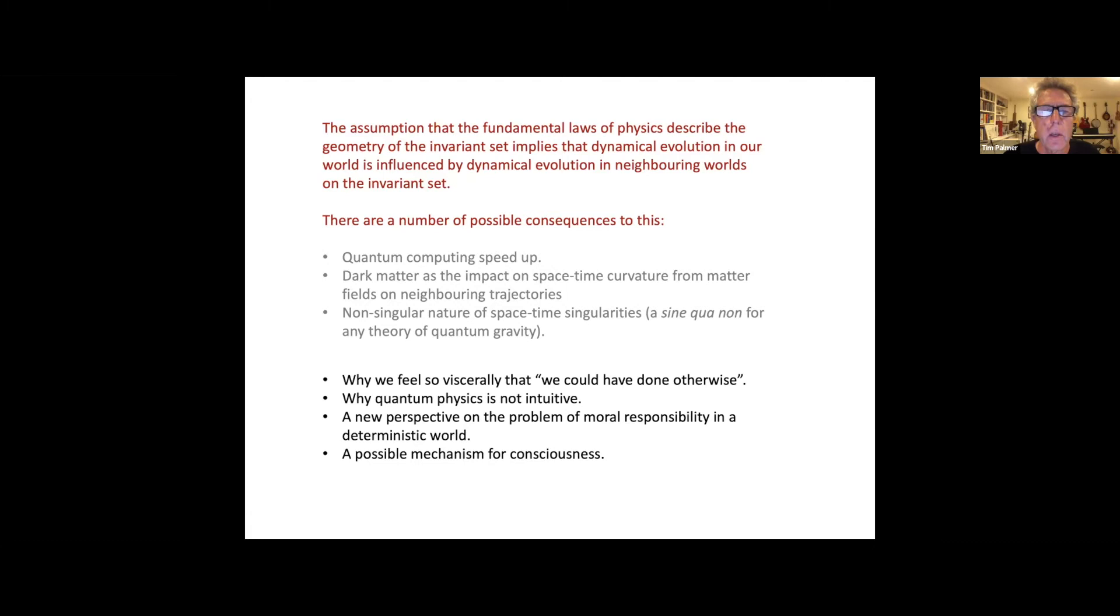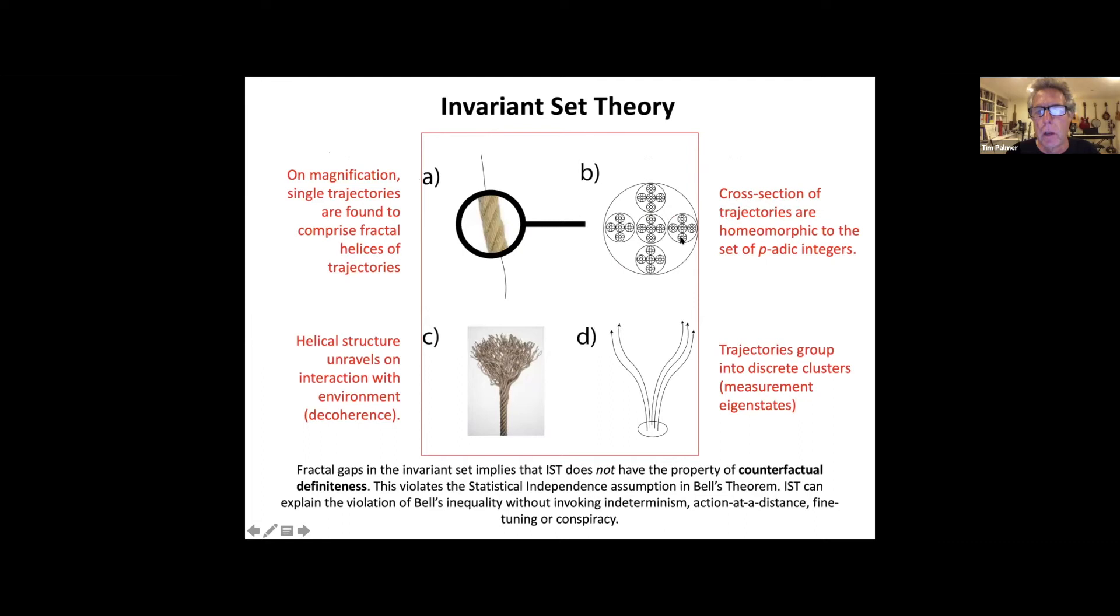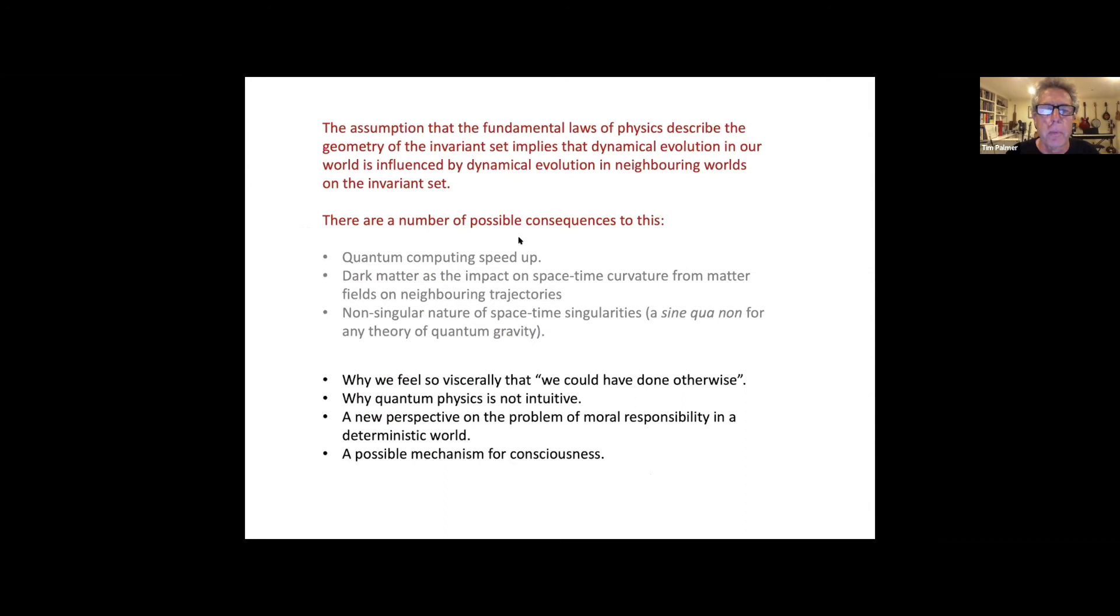The key point is that the assumption is that fundamental laws of physics describe the geometry of the invariant set, and that in turn implies that any dynamical evolution law that you may have for our world is necessarily influenced by dynamical evolution in neighboring worlds on the invariant set. There are a number of consequences of this, things like explaining quantum speed up, potentially explaining dark matter, potentially explaining the non-singular nature of space-time singularities. But this isn't a conference about that, so I'll pass over these points.